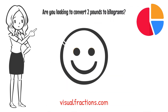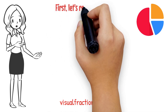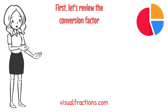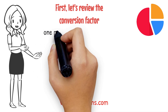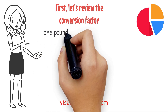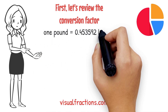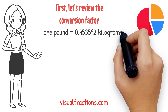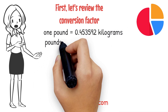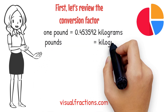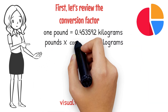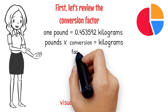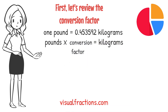Here's how you do it. First, let's review the conversion factor: one pound is equal to approximately 0.453592 kilograms. To convert pounds to kilograms, all you need to do is multiply the number of pounds by the conversion factor.